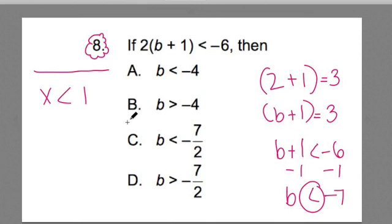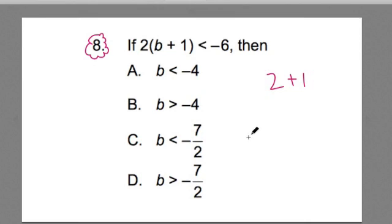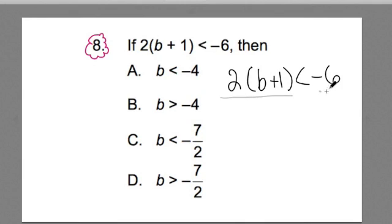Okay, so let's just solve this problem. We have 2 times a quantity of b plus 1 is less than negative 6. I'm going to divide both terms by 2, keeping this algebraic equation equal, or the algebraic inequality equal. These cancel out.